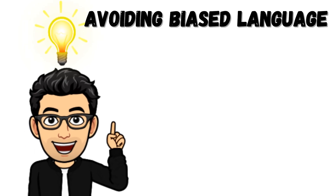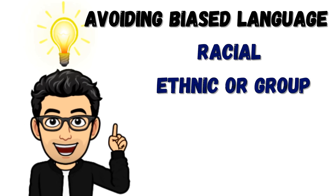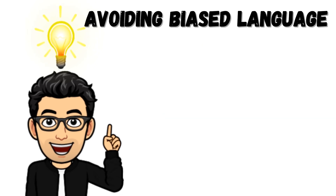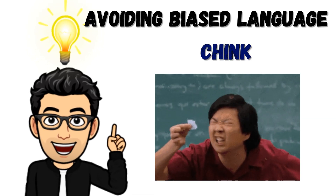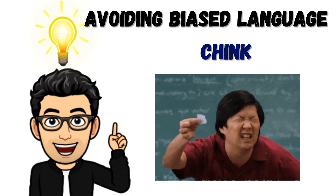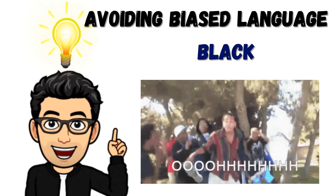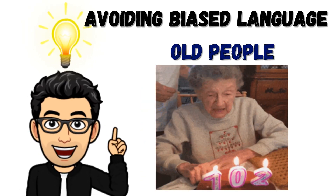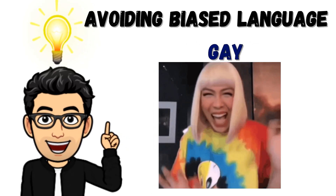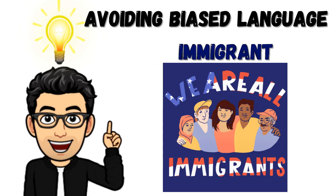Avoiding biased language, including language with a racial, ethnic, group, or gender bias, or language that is stereotypical. For example: 'chink' instead of a person with Asian descent, 'people of color' instead of 'black,' 'elderly' instead of 'older people,' 'homosexual' instead of 'gay,' and 'illegal alien' instead of 'immigrant.'